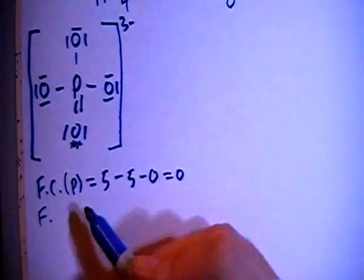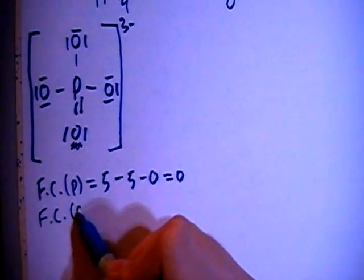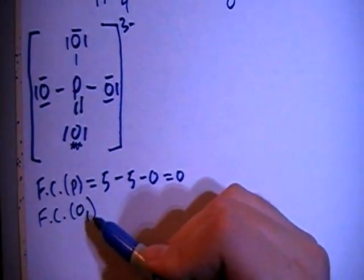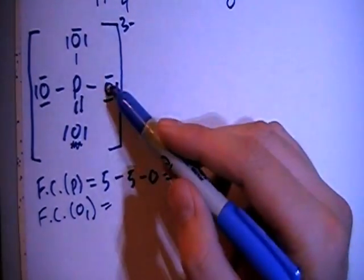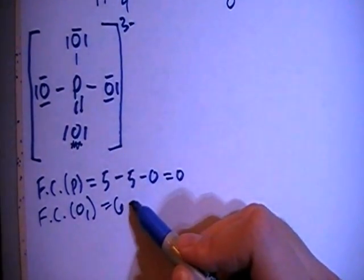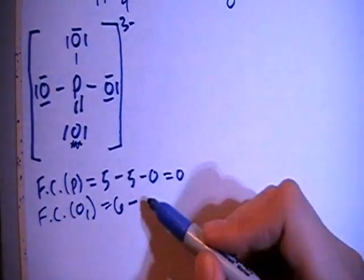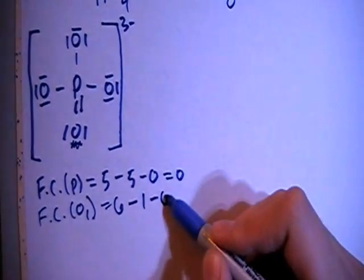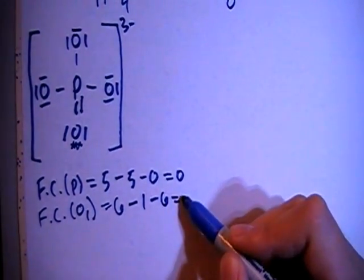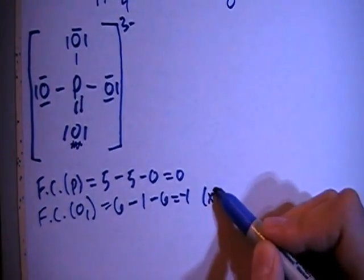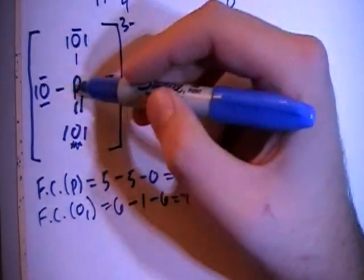The formal charge on oxygens with a single bond, O sub 1, so this one, this one, and this one, is going to be 6 valence brought in for each one, minus 1 bond for each, minus 6 non-bonding electrons for each oxygen for a formal charge of minus 1. And remember, multiply that times 3 because there are 3 of those oxygens with a single bond.